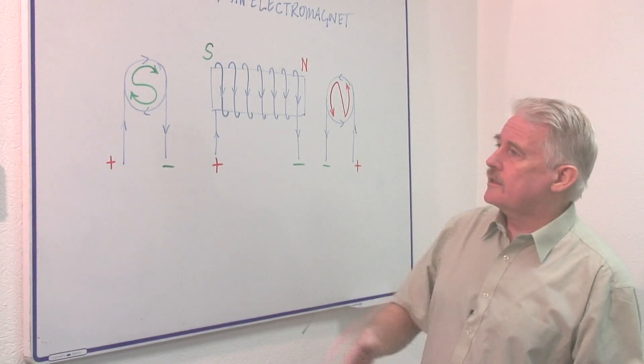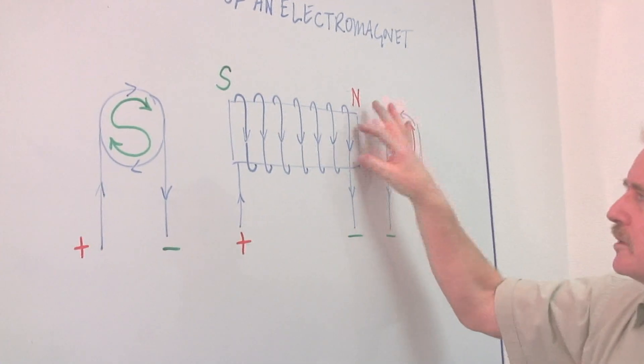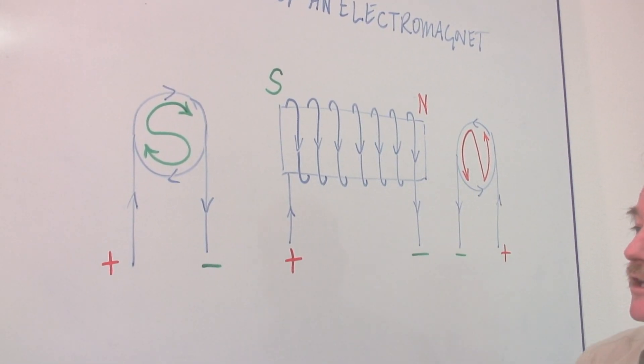Here I have my electromagnet with a south at this end, a north at this end, and it is basically a current carrying conductor wrapped around a piece of cardboard. There are several ways of making it stronger.